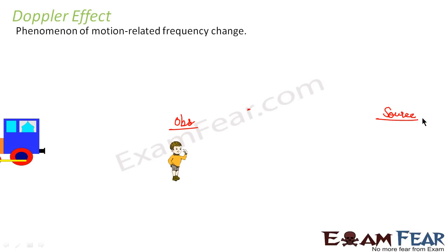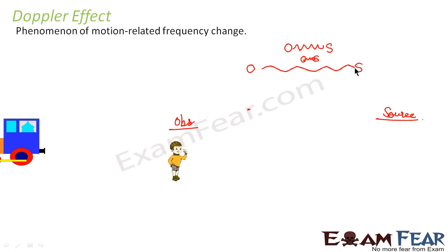When the observer and the source approach towards each other, the waves get compressed, coming nearer to each other. Therefore the wavelength decreases and the frequency increases. Conversely, if the object and the source move far away from each other, the wavelength increases and as a result the frequency decreases. It is very logical: as two objects come nearer, the frequency will increase; as the two objects go away from each other, the frequency has to decrease. This is basically the Doppler effect.